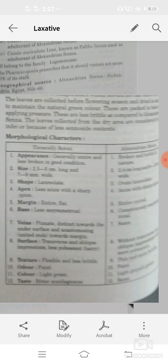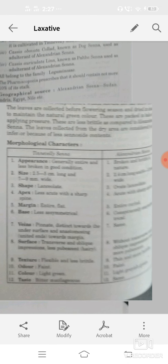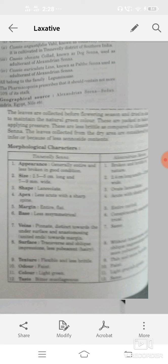Texture: Tinnevelly senna flexible. In Alexandria thin or more brittle. Color: light green. Alexandria light green. Taste: bitter. Mucilaginous. Alexandria same, bitter in taste.